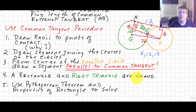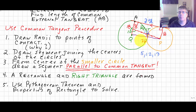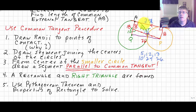Using the common tangent procedure, I created a rectangle and used properties of a right triangle. I initially said 12, but that was an error — I forgot to expand the 5-12-13 triple. It's actually 10, 24, 26. That's a good example of a common error. So my common tangent AB is 24 units long.